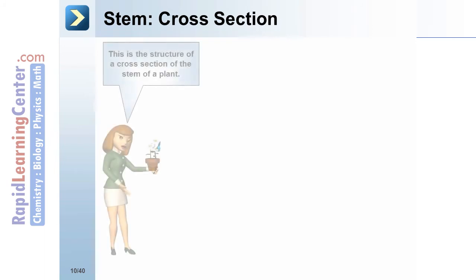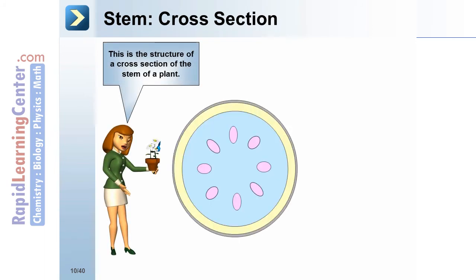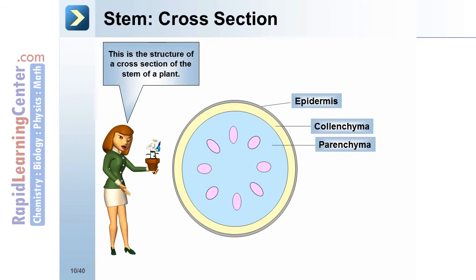In the cross-section of a stem, the epidermis is the outermost layer, followed by collenchyma cells and parenchyma cells, which are part of the cortex.